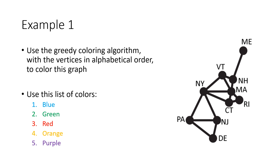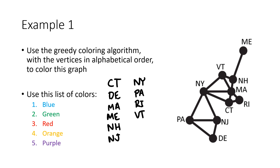Here's our example with the states in the northeast part of the country. We'll use this list of colors: color number one is blue, number two is green, then red, orange, purple, and so on. Our first step is to put these vertices in alphabetical order — the problem even tells us to use alphabetical order. We have 10 states, and here is that alphabetical order, starting with Connecticut all the way down to Vermont. Walking through the greedy coloring algorithm, our first color is blue, so Connecticut is colored blue.